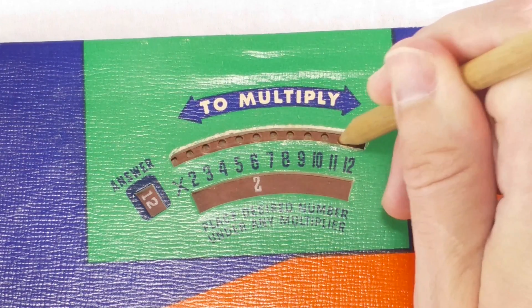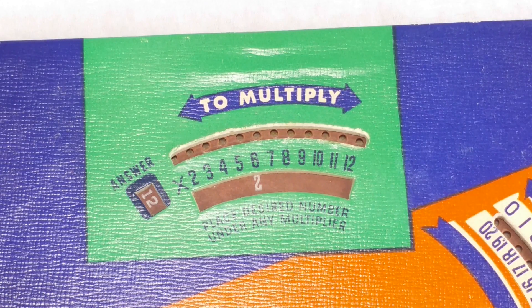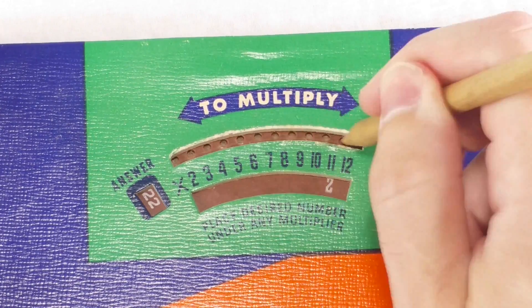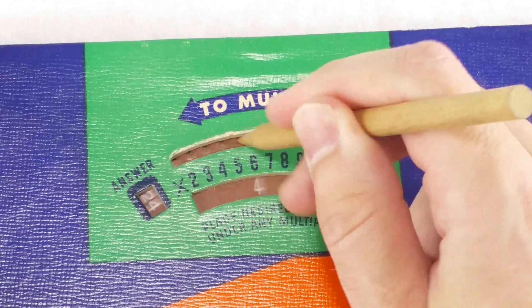You just spin the thing until your first number appears somewhere in this window. Then you line it up with the second number and read the answer. There we go. 6 times 2 is 12. Or 6 times 5 looks like this.